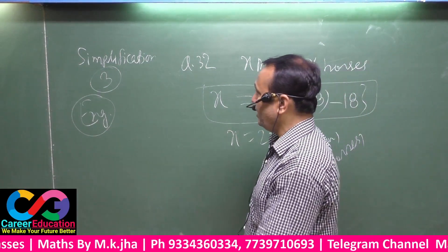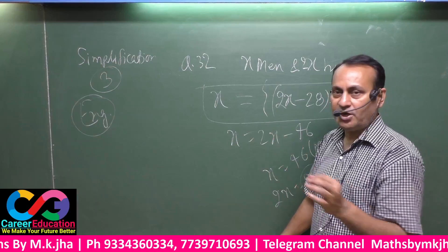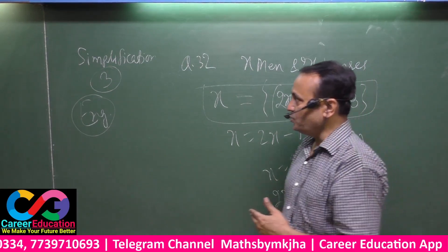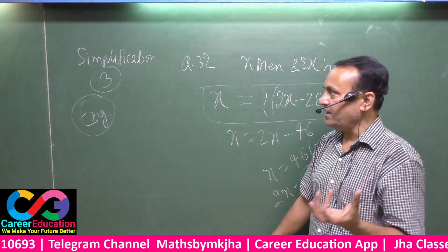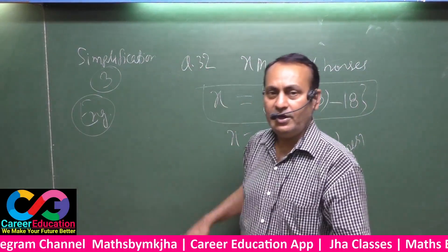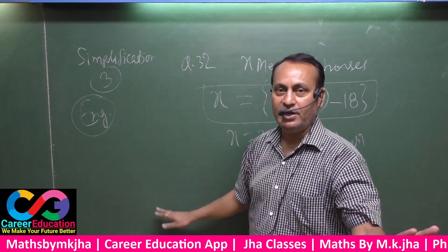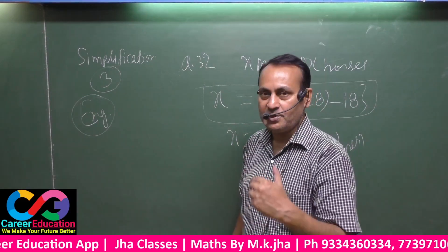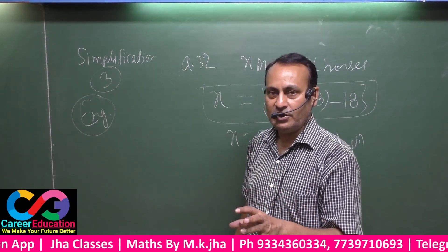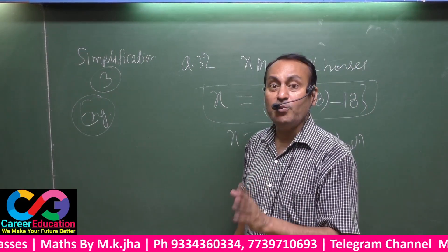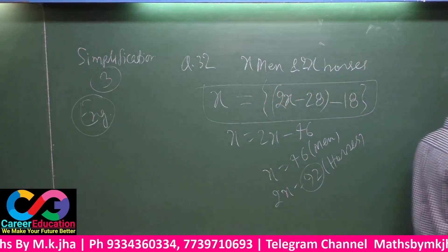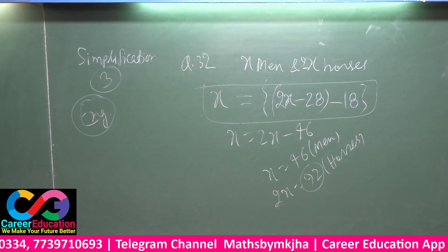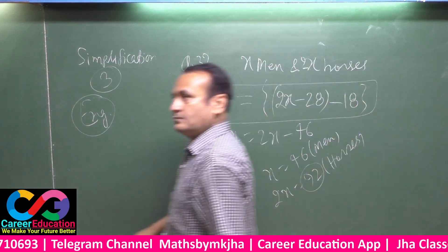I conclude simplification class three up to question number thirty-two, which was the language-based part. Simplification still continues, and there will be a numerical part in class four. The next questions will not have language — only calculations will be there. Simplification class four will be based totally upon numericals only. Thank you.